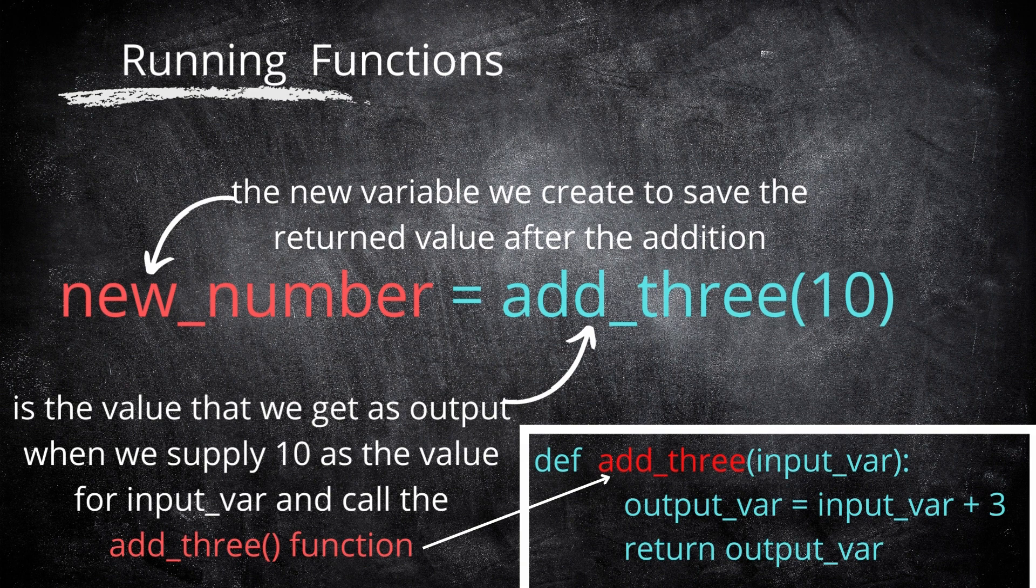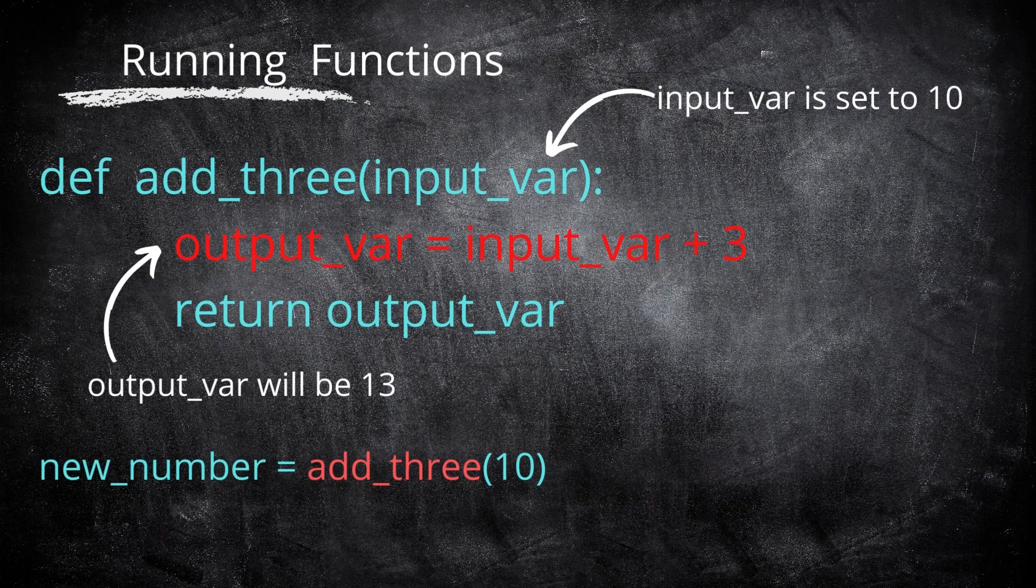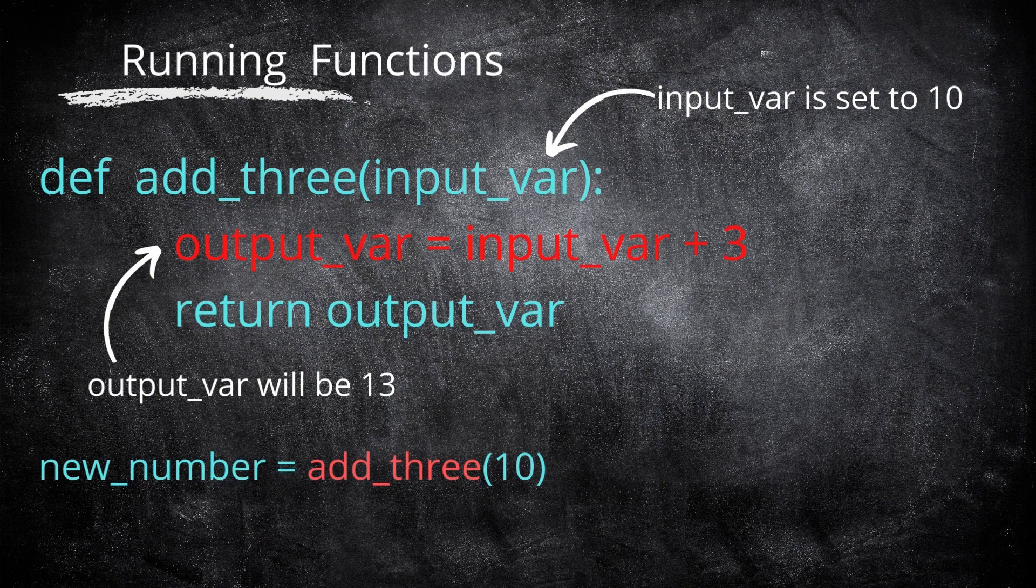When the function runs it runs all of the code in its body from top to bottom. First it calculates output_var = input_var + 3 which sets the output_var to 13.